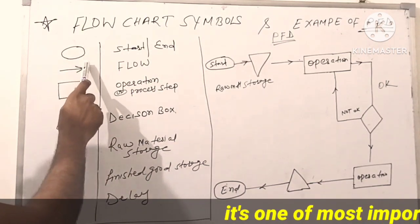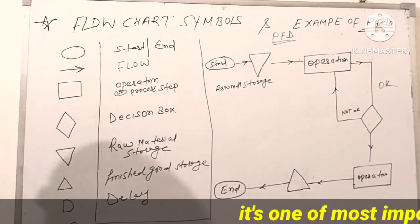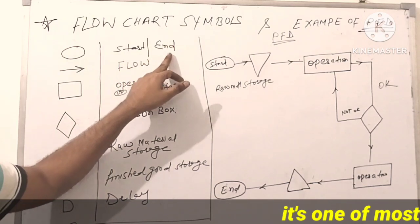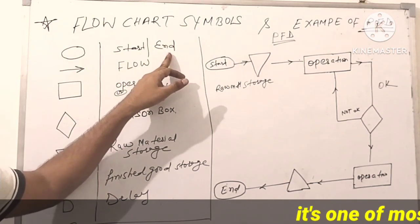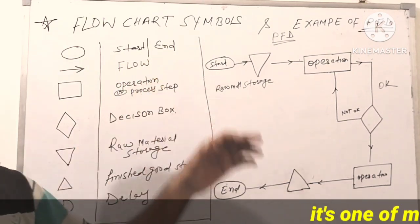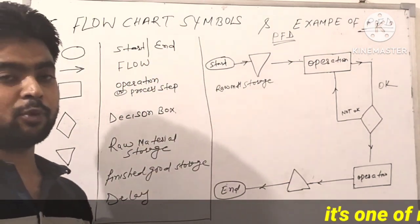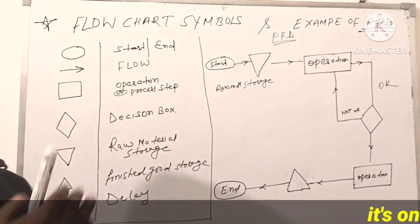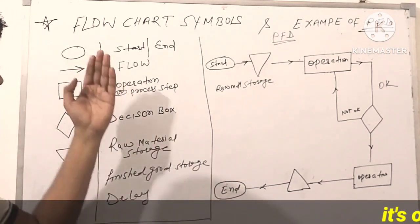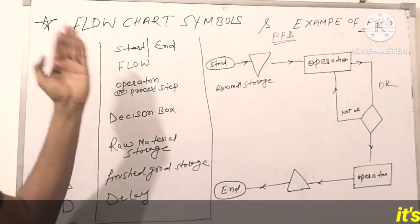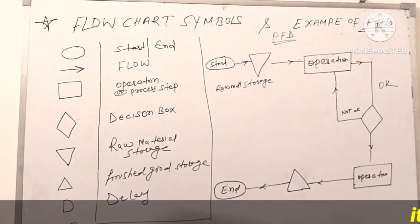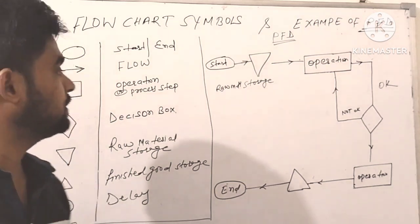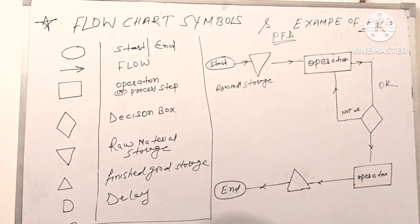You can see here there is a shape — that means start and end. When the process starts, you can use this symbol. When the process ends, you can use this same symbol. So for both start and end, we use the same symbol.